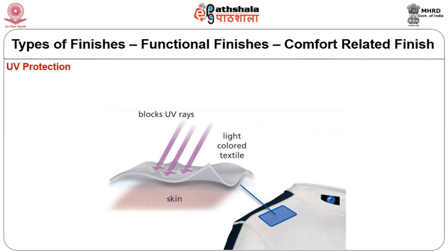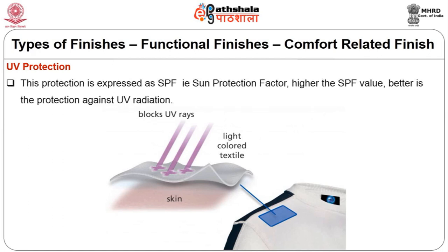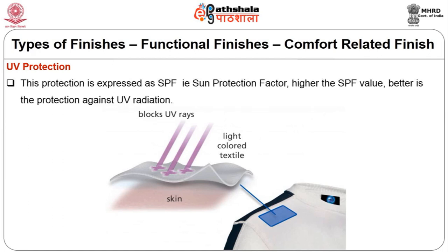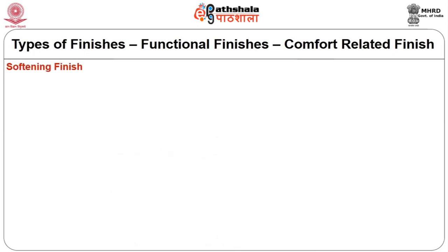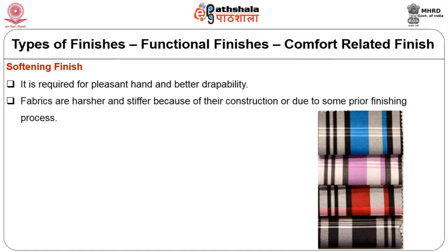UV protection: fabric treated with UV absorbers deflects harmful ultraviolet rays from the sun, reducing a person's UVR exposure and protecting the skin from damage. This protection is expressed as SPF — sun protection factor. The higher the SPF value, the better the protection against UV radiation. Softening finish is required for pleasant hand and better drapability, as fabrics can be harsher and stiffer because of their construction or due to some prior finishing process.